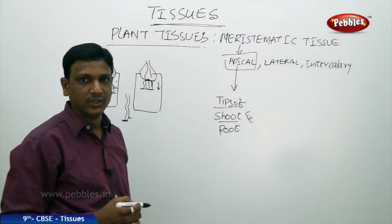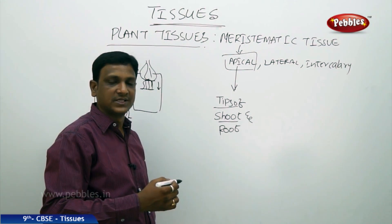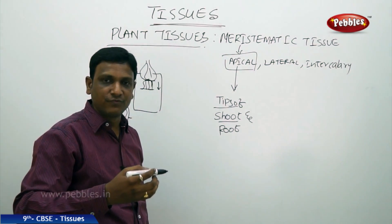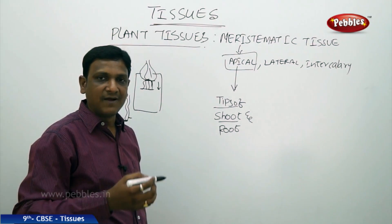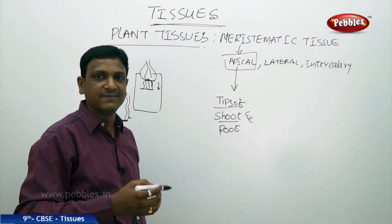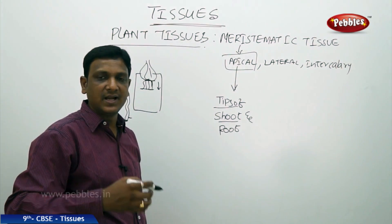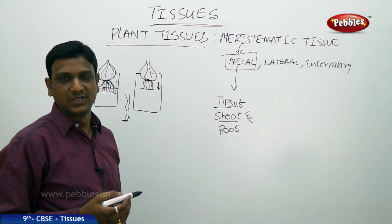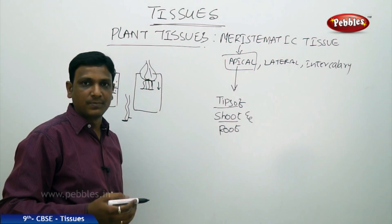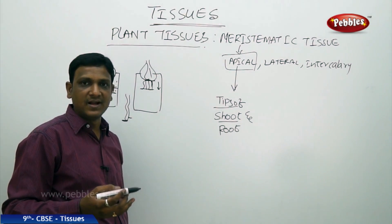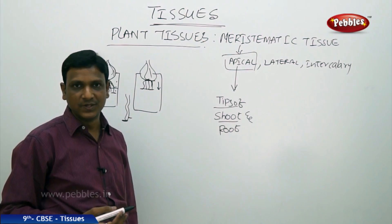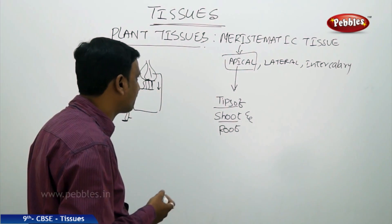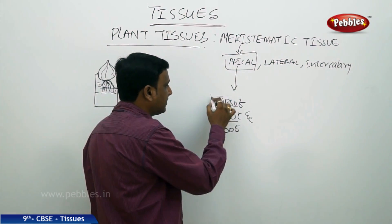The meristematic tissue forms new cells. After some time, these new cells differentiate and undergo certain changes, becoming permanent tissues. Meristematic cells divide repeatedly, then stop dividing and change into other tissue types. The apical meristem is found in the tips of shoots and roots.